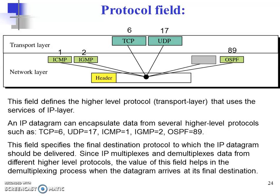Next is the protocol field. This field tells which higher-level protocol is being used along with IP. For example, if TCP is encapsulated the value is 6, UDP is 17, ICMP is 1, IGMP is 2, and OSPF is 89. During multiplexing and demultiplexing, the destination uses this field to know which protocol is being used with this encapsulation.